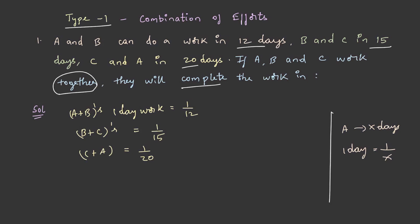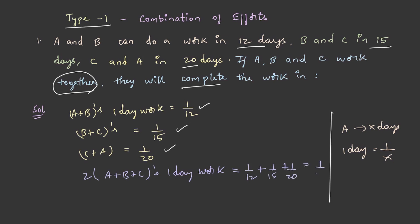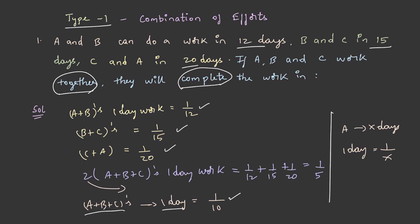Since A, B and C all work together, we add all three expressions: 2(A + B + C)'s one day work equals 1/12 + 1/15 + 1/20. On solving this, we get 1/10 after dividing by 2, meaning A+B+C's one day work is 1/10. By reciprocating, A, B and C together finish the work in 10 days.